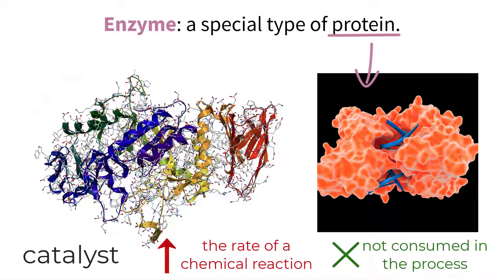They do not undergo any permanent change and can therefore be used over and over again to speed up the same chemical reaction. This becomes very important for the human body because we have an insane number of reactions happening in and around our cells at any given moment.